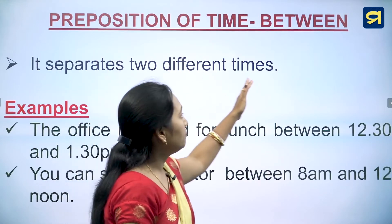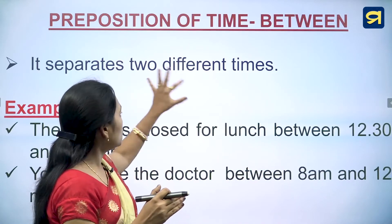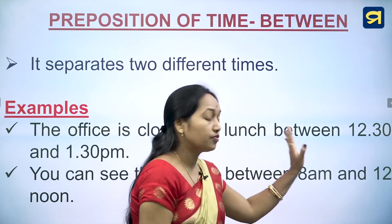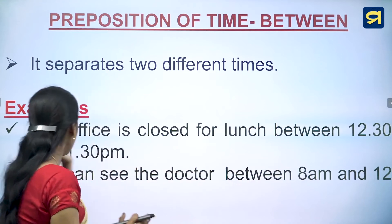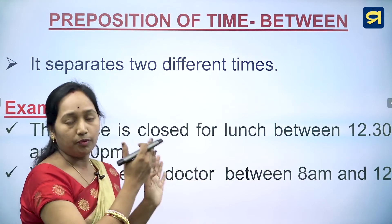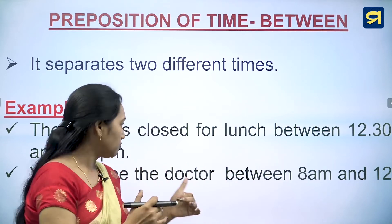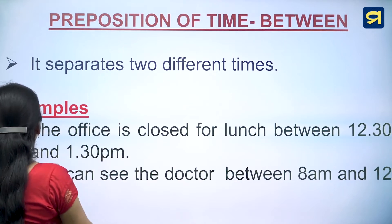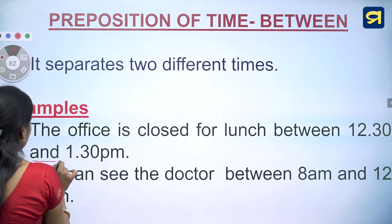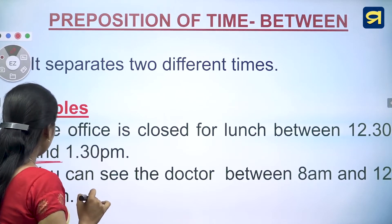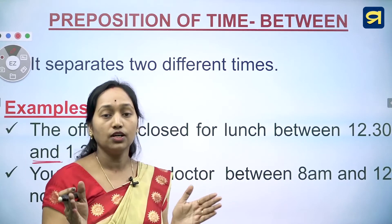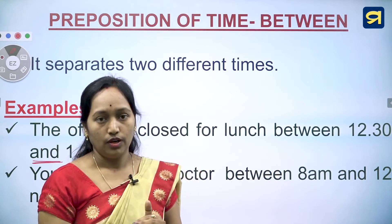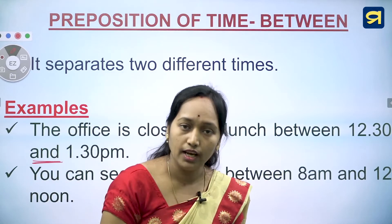Preposition of time 'between'. It separates two different times, and when 'between' is used we must also use 'and'. For example: the office is closed for lunch between 12:30 and 1:30 pm. You can see the doctor between 8 am and 12 noon.